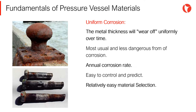Uniform or general corrosion acts evenly on a metal surface, which in most cases can be controlled by providing a range of admissible corrosion thickness. The metal thickness will wear off uniformly over time, which is the most common and least dangerous of all types of corrosion.